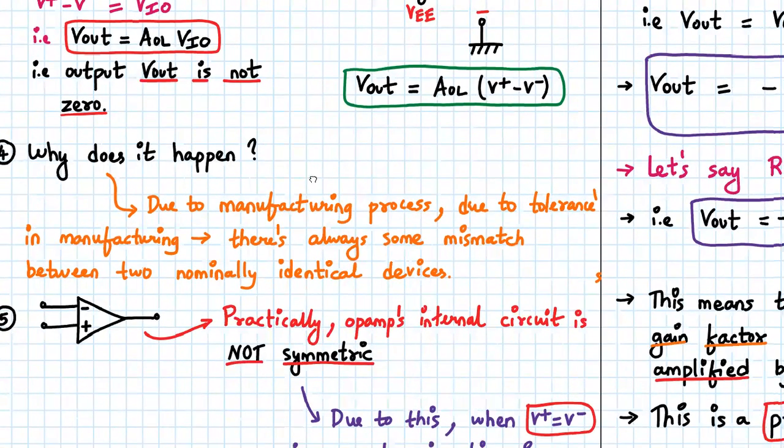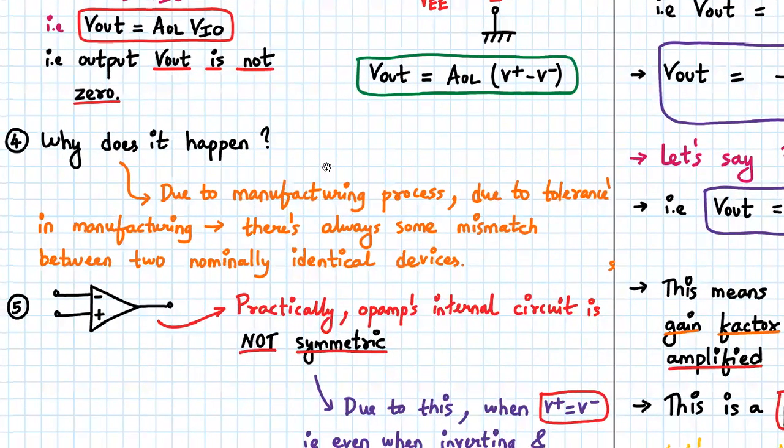Why does this random voltage appear at the input terminals? The reason is due to the manufacturing process. Due to tolerances in the manufacturing process parameters, there are always some mismatches between two nominally identical devices.